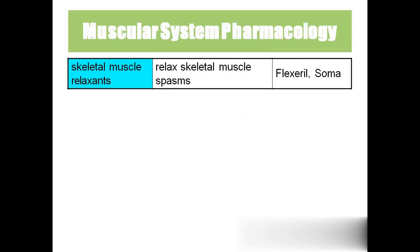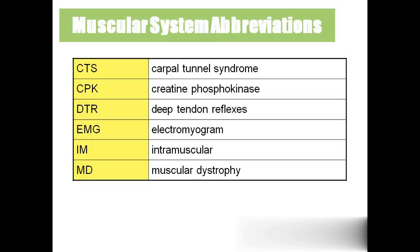Coming to pharmacology — skeletal muscle relaxants are usually given to promote sleep or relieve spasms. Coming to abbreviations: CTS — carpal tunnel syndrome. CPK — creatine phosphokinase. DTR — deep tendon reflexes. EMG — electromyography, recording the electrical activity of the muscle. IM — intramuscular; usually injections are given as intramuscular. MD — muscular dystrophy.